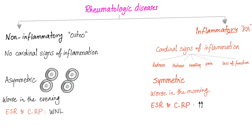Let's put it all together. Non-inflammatory (e.g., osteoarthritis) vs. inflammatory (e.g., rheumatoid arthritis). Inflammatory disease shows the cardinal signs: redness, hotness, swelling, pain, loss of function (rubor, calor, tumor, dolor, functio laesa). Non-inflammatory is asymmetric — like tires, you don't wear them symmetrically, it's just wear and tear. Inflammatory is symmetric. Non-inflammatory arthritis like osteoarthritis is worse in the evening (more wear and tear through the day). Inflammatory arthritis like rheumatoid is worse in the morning, because movement washes out inflammatory debris. In non-inflammatory arthritis, ESR and CRP are within normal limits; in inflammatory arthritis, ESR and CRP are usually elevated.